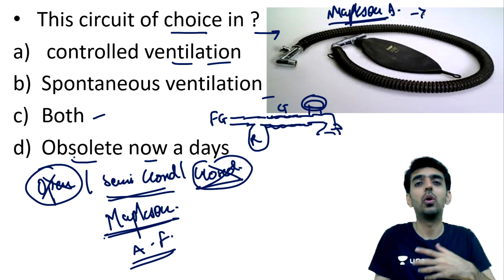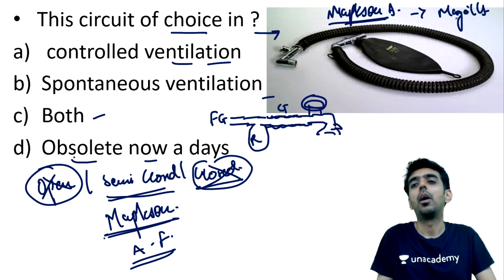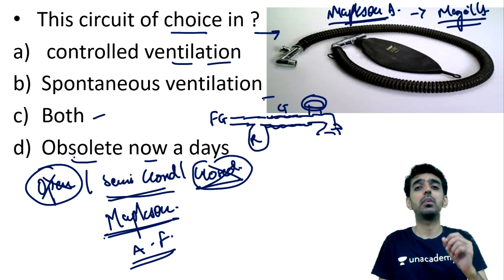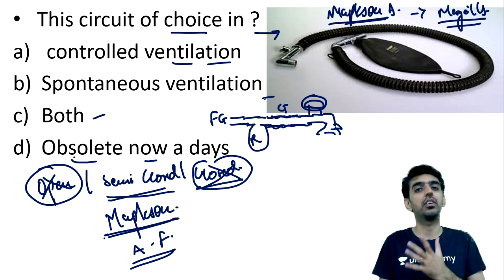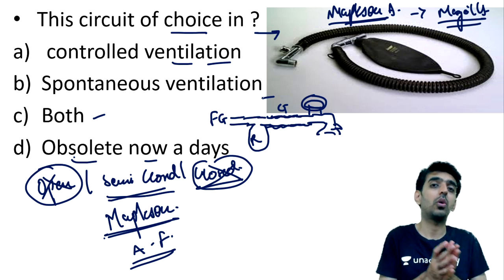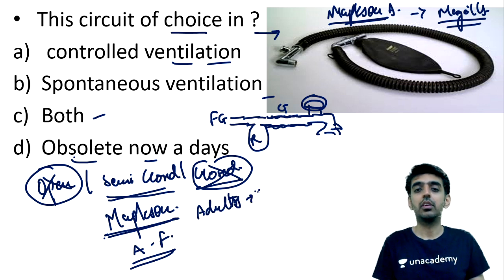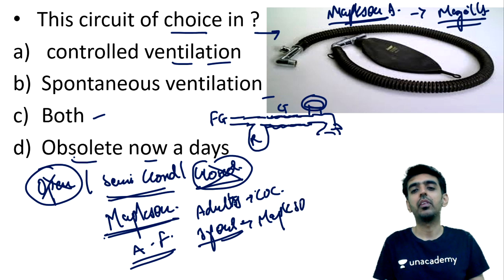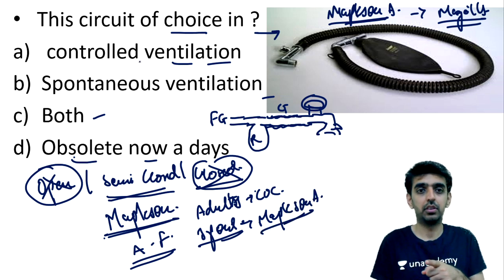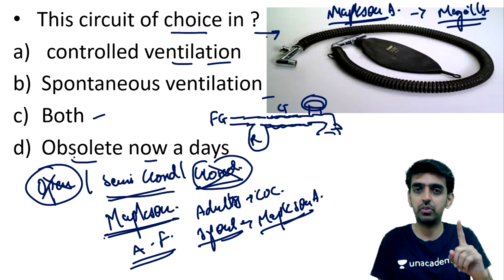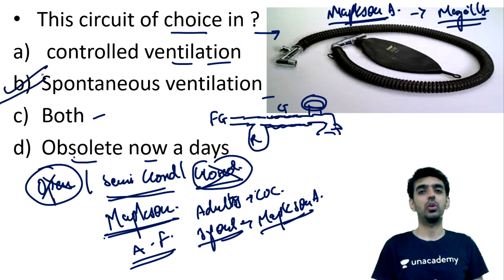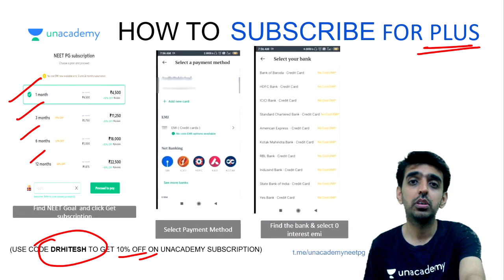The Mapleson A circuit is also known as the Magill circuit. It is still incorporated into the anesthesia machine today. In adults, the circuit of choice for spontaneous ventilation is Mapleson A — the Magill circuit. So the correct answer is that this circuit is used as the circuit of choice for spontaneous ventilation. I hope you enjoyed today's session.